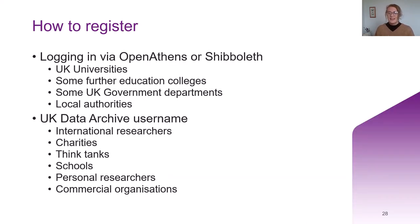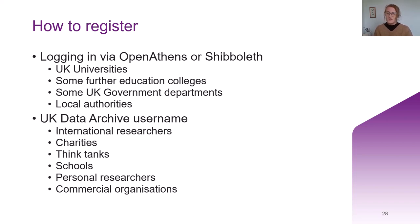Most of the data in our collections can be accessed free of charge, although there is potentially a charge for some commercial uses. To access some data you will need to register. You can do this by logging in through your institutional login — for example, if you are part of a UK university, a further education college, a government department or a local authority, you can go through your usual portal, usually OpenAthens or Shibboleth. If you don't have an institutional login, that's perfectly fine — you can request a UK Data Archive username. This might be relevant if you are an international researcher, you work for a charity or think tank, you're wanting to access data for a school, you're from a commercial organisation, or you're a personal researcher.